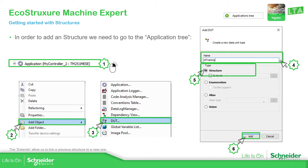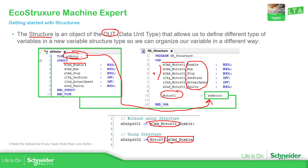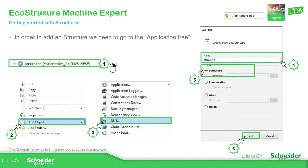To continue with this, we need to know how we can add a structure. We just need to be in the Applications tree in our system, right-click on the controller, select 'Add Object,' and select the DUT — because as I mentioned before, the structure is a type of the DUT. Once you select the DUT, you just need to select 'Structure.' There is another option called 'Extend' that we're going to cover later.